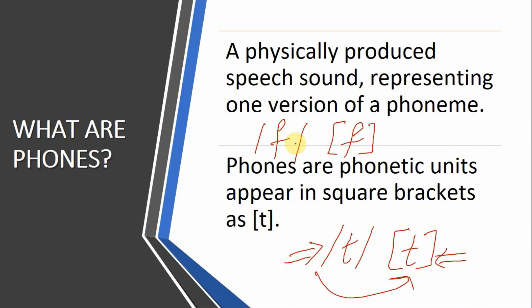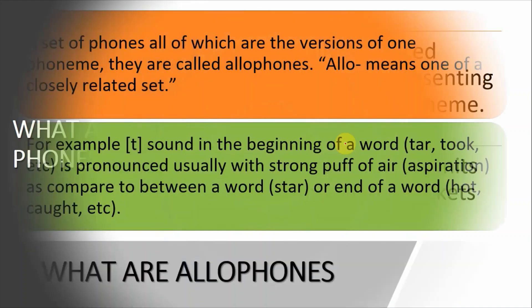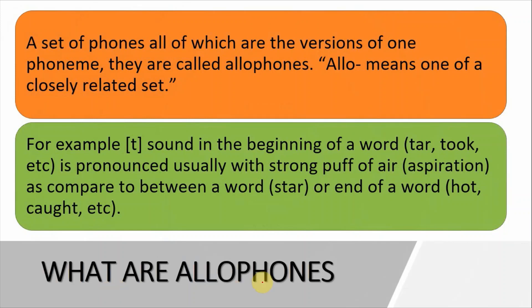A phoneme can have different realizations — those are called allophones. Allophones are a set of phones which are all versions of one phoneme. 'Allo' means one of a closely related set. So allophones are all the different versions of one phoneme. For example, consider one sound that appears at the beginning of words like...